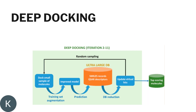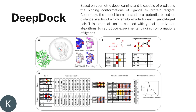In Deep Docking's iterative process, it first docks a small sample of molecules, then predictions are made using QSR descriptors calculated for the large database. The virtual hits are updated and it keeps looping to arrive at the top scoring molecules. Another entry in this field is DeepDock, based on geometric deep learning, which is capable of predicting binding conformations. This model learns a statistical potential based on distance likelihood, tailor-made for each ligand-target pair, and can be coupled with a global optimization algorithm to reproduce experimental binding conformations.